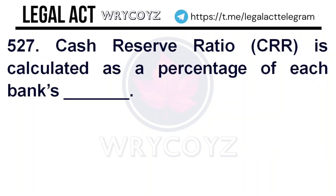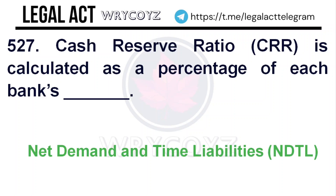Question 527: Cash reserve ratio is calculated as the percentage of each bank's — Answer is net demand and time liabilities.